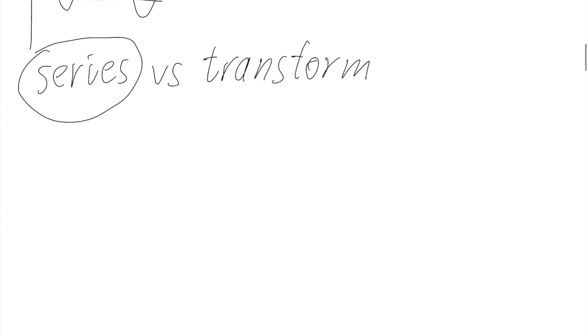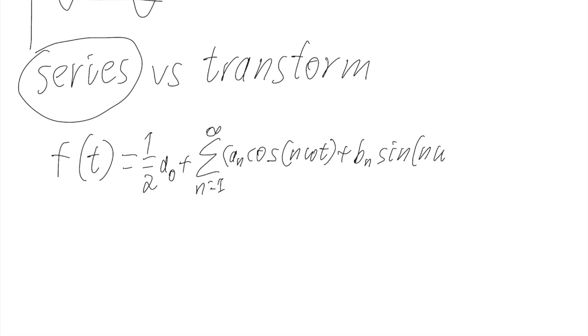So there are several formulas associated with this. If we have the function f(t) that we're expanding into a Fourier series then this will be the formula: one half a_0 plus sigma from n equals one to infinity of a_n times cosine of n omega t plus b_n times sine of n omega t.